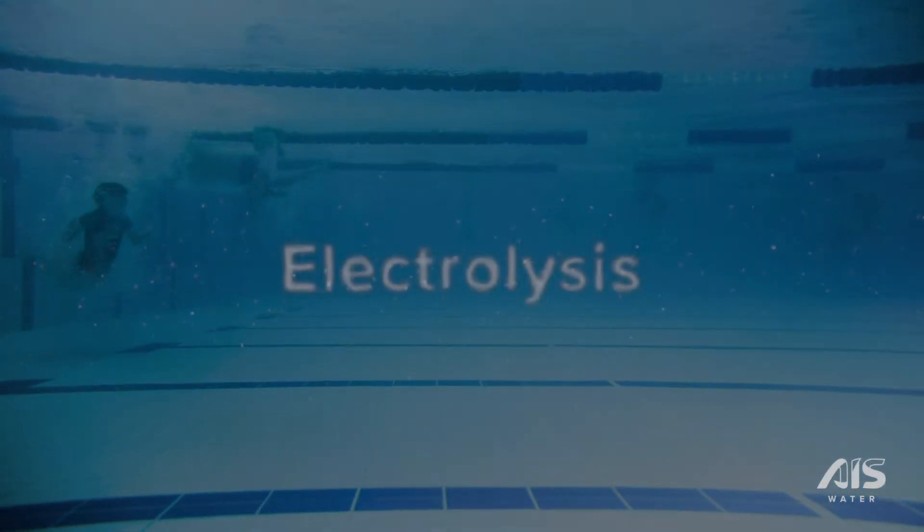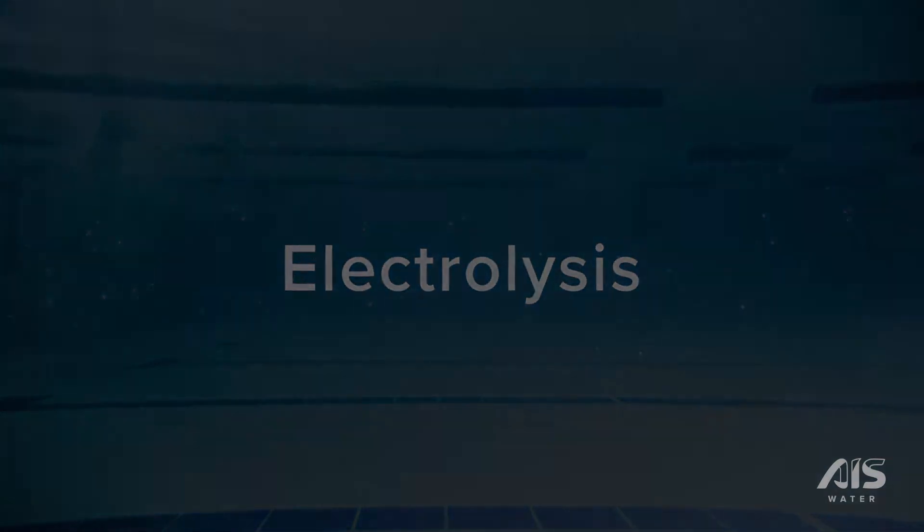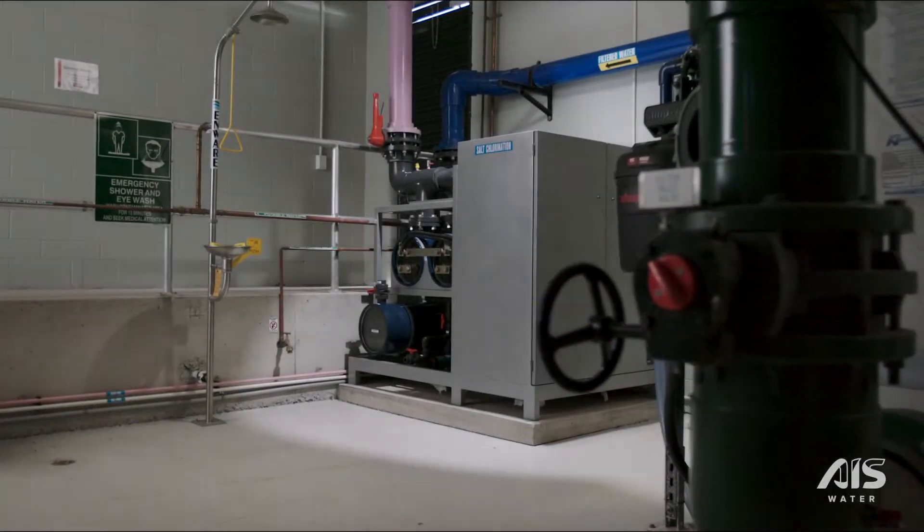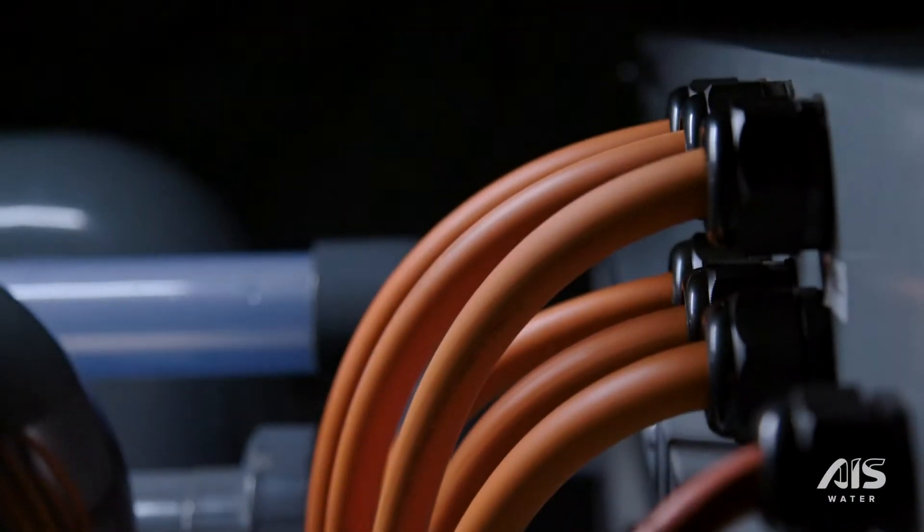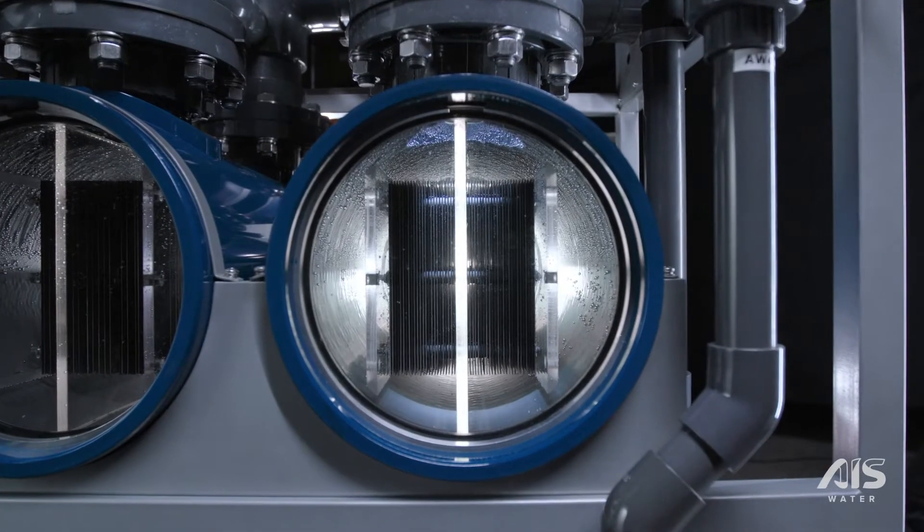This is the process of electrolysis. AIS Water's technology is installed within the pump room alongside the filters. The chlorine generator is made up of a power supply and an electrolytic cell.